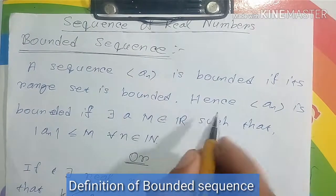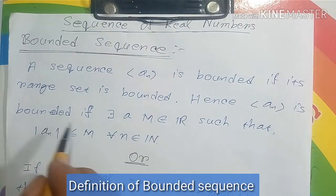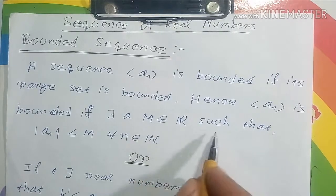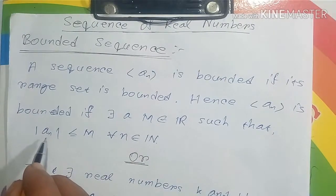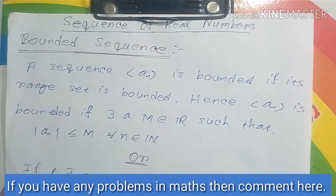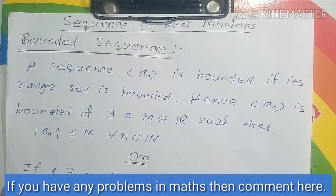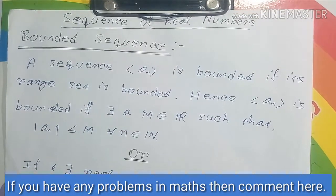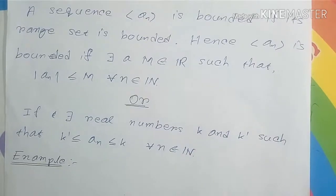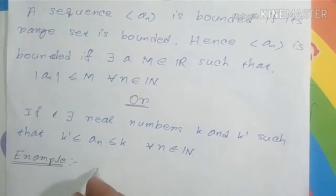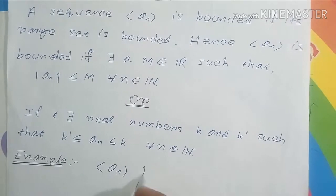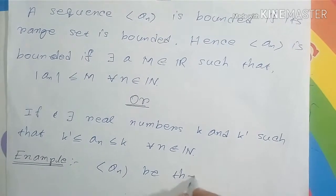A sequence a_n is bounded if there exists a capital M belonging to the real numbers such that |a_n| ≤ M for all n belonging to the natural numbers. Before understanding that definition of bounded sequence, let's first choose an example.